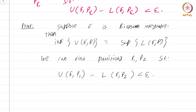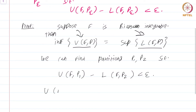Why is this the case? Well, since this infimum is equal to this supremum, there must be some quantity here and some quantity here that get arbitrarily close to each other. So for this fixed epsilon, we should be able to find a partition P1 and a partition P2 such that U(f,P1) minus L(f,P2) is less than epsilon. Now it is easy to find a common refinement, so U(f, P1∪P2) minus L(f, P1∪P2) is less than epsilon.